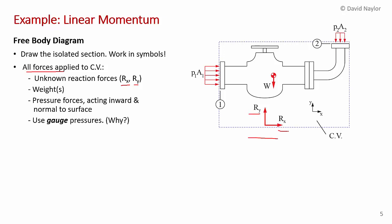Place the weight and pressure forces on the diagram. We have two pressure forces: P1A1 at the inlet and P2A2 at the outlet. The blue line represents the control volume boundary. Remember from chapter 2 that pressure acts inward and normal to the cut surfaces, so P1A1 and P2A2 both act inward — this is independent of flow direction.